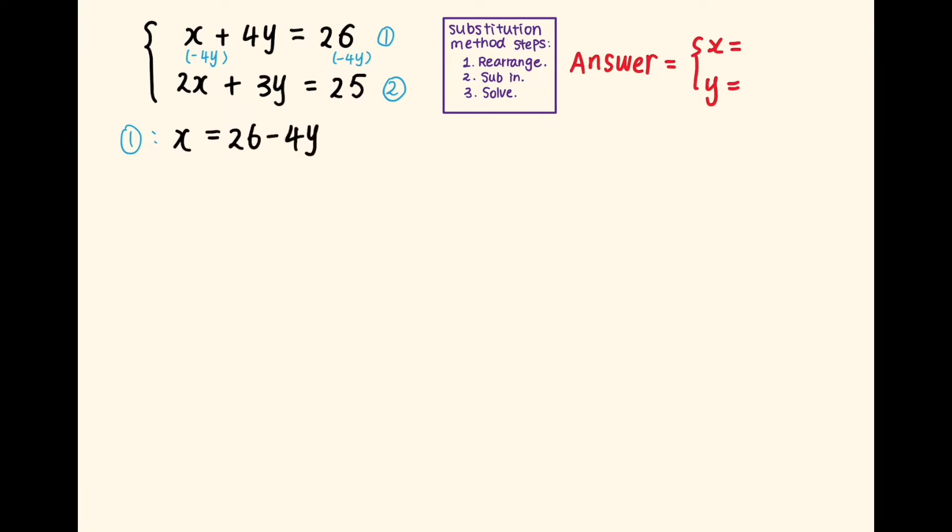Now let's set this expression for x into the second equation. Keep in mind, every time we see x, we'll replace it with the expression 26 minus 4y. We need to put brackets around 26 minus 4y because x is represented by this expression. So the second equation now becomes 2 times x, which is 26 minus 4y, plus 3y is equal to 25. Notice we only have one variable in this equation now, which is y.